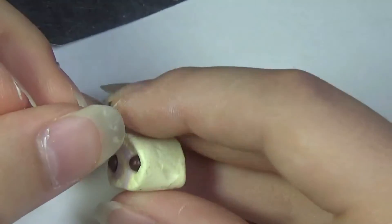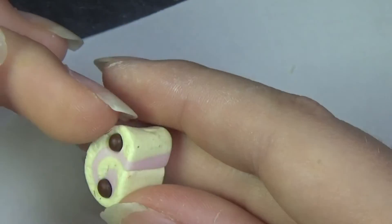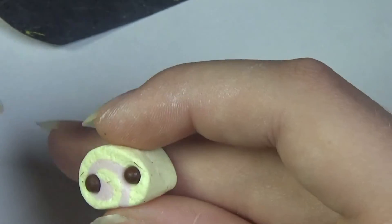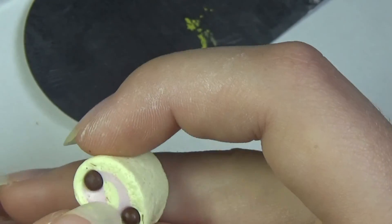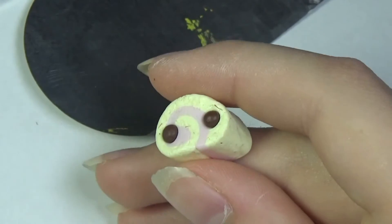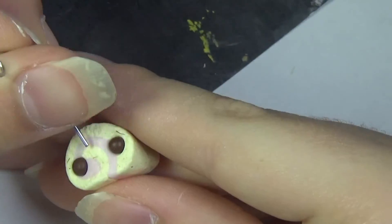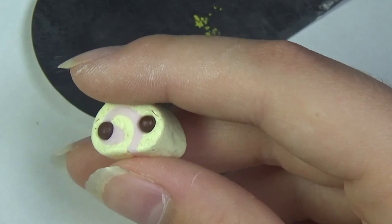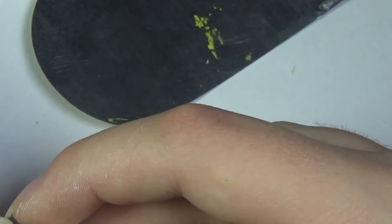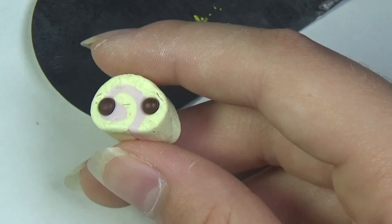So for the strawberry, I forgot to film it, but you just want to take some pink clay, roll it into a teardrop shape, use a needle tool to add some texture onto it and then add some leaves on top of it. Flip it upside down. Using TLS, add it on top of the cake roll and then you're done.